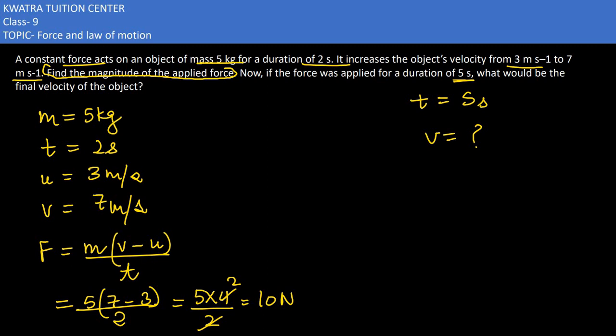The force is 10 newtons. What formula can we use? F equals m times (v minus u) over t. So F is 10, m in this case is 5, and we need to find v.